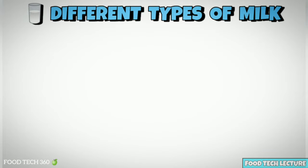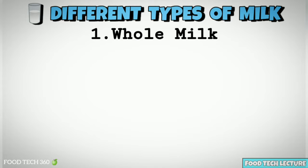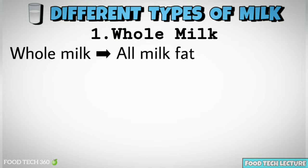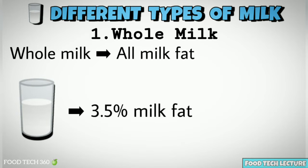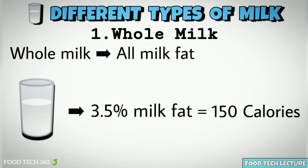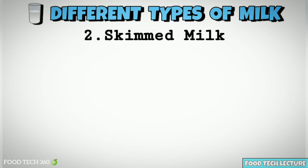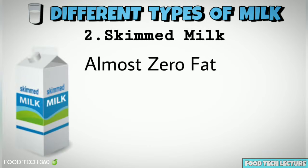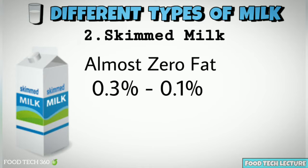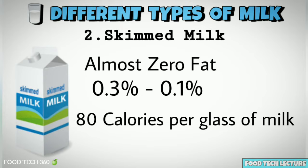Now let's see the different types of milk. First, whole milk. Whole milk contains all the milk fat. One glass of whole milk contains 3.5% milk fat, which provides about 150 calories. Whole milk is also creamier and full of flavor. Second, skimmed milk. Skimmed milk has almost zero fat content. Though skimmed milk contains all the nutrients found in whole milk, like vitamins and minerals, it gives just half the calories of full-cream milk — around 80 calories per glass.